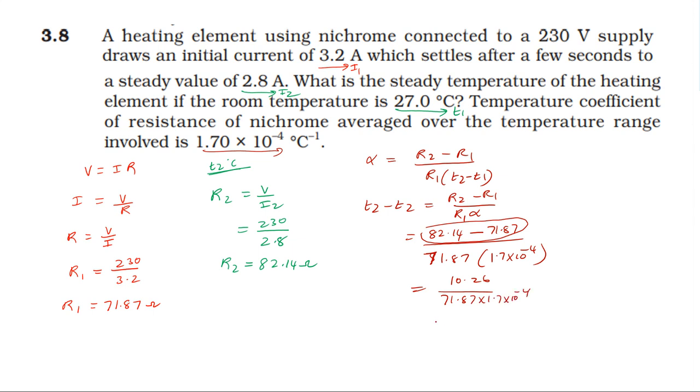This is simply nearly 840.33. So T2 equals 840.33 plus T1, which is 27, giving T2 equals 867.33. So the steady temperature of the heating element is 867 degrees centigrade.